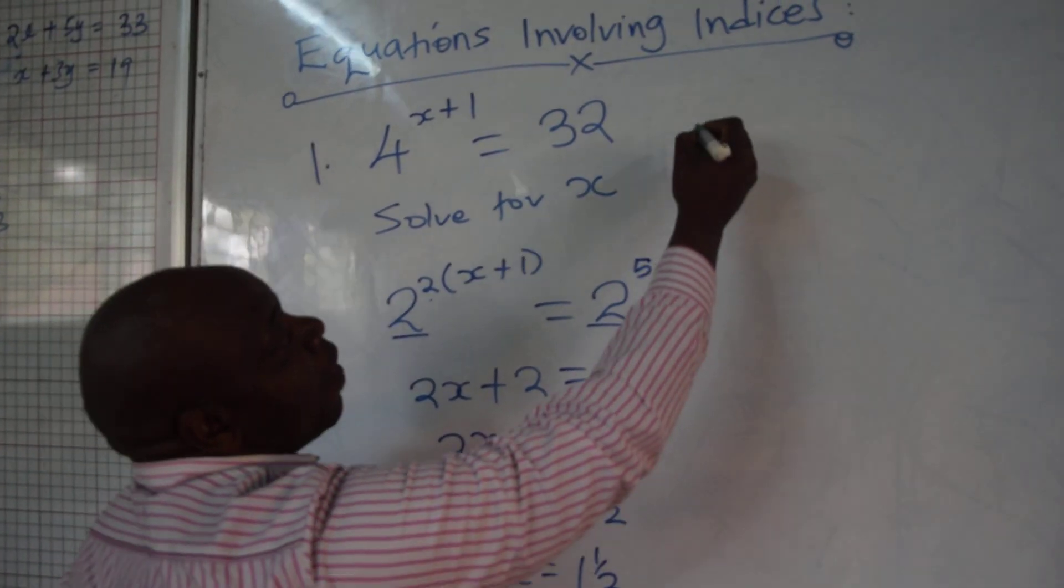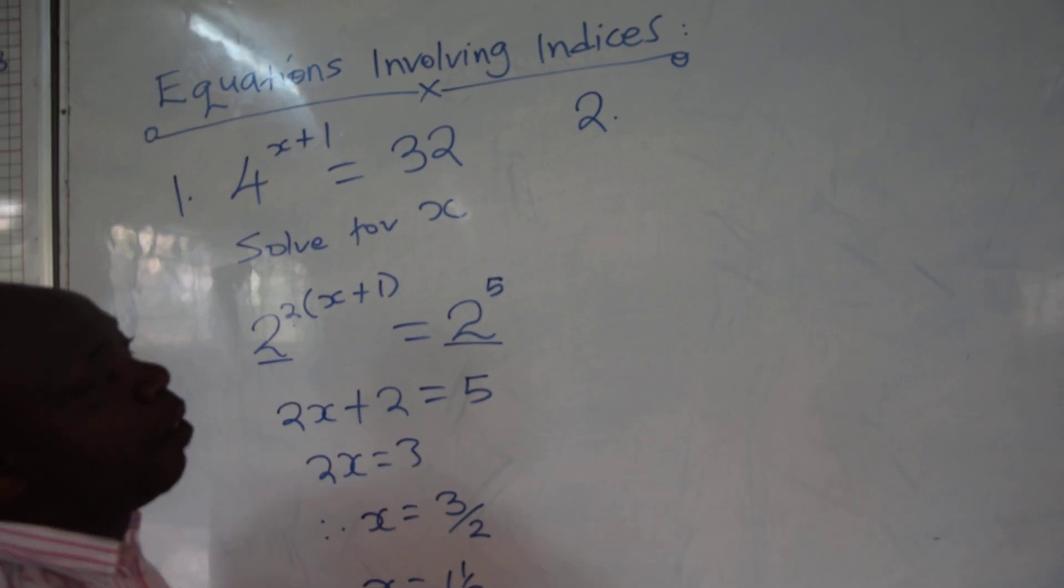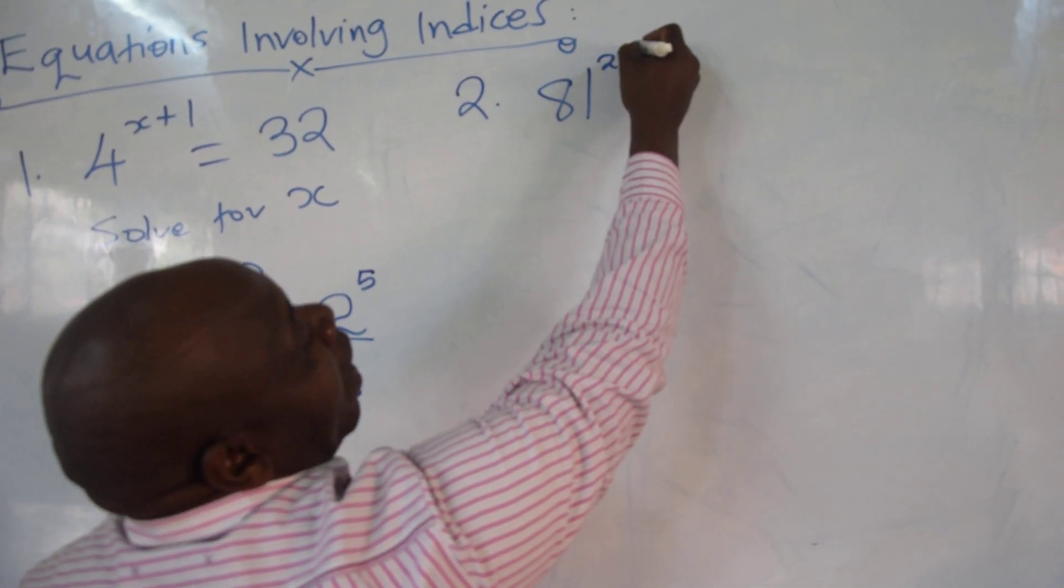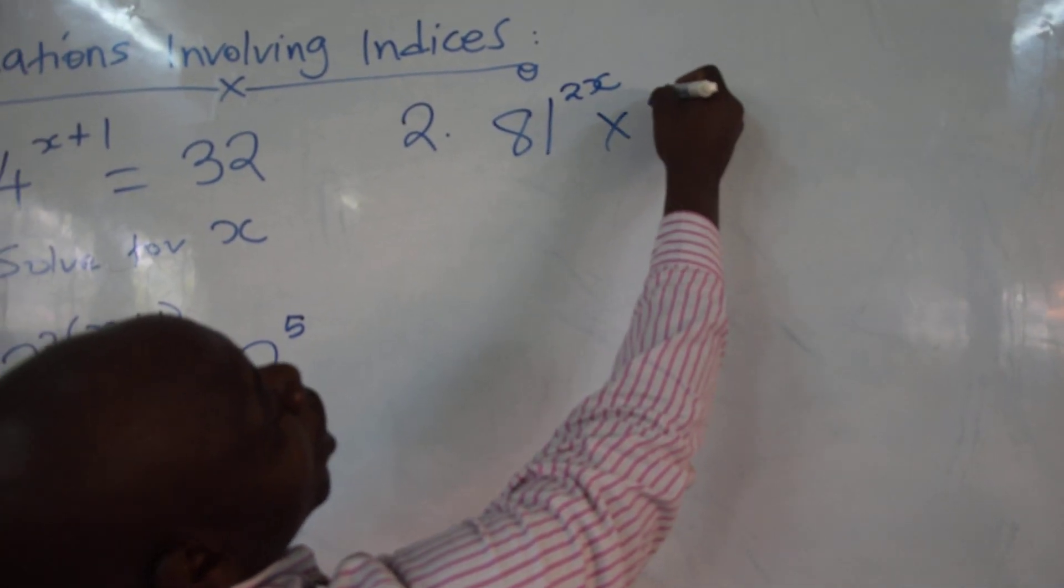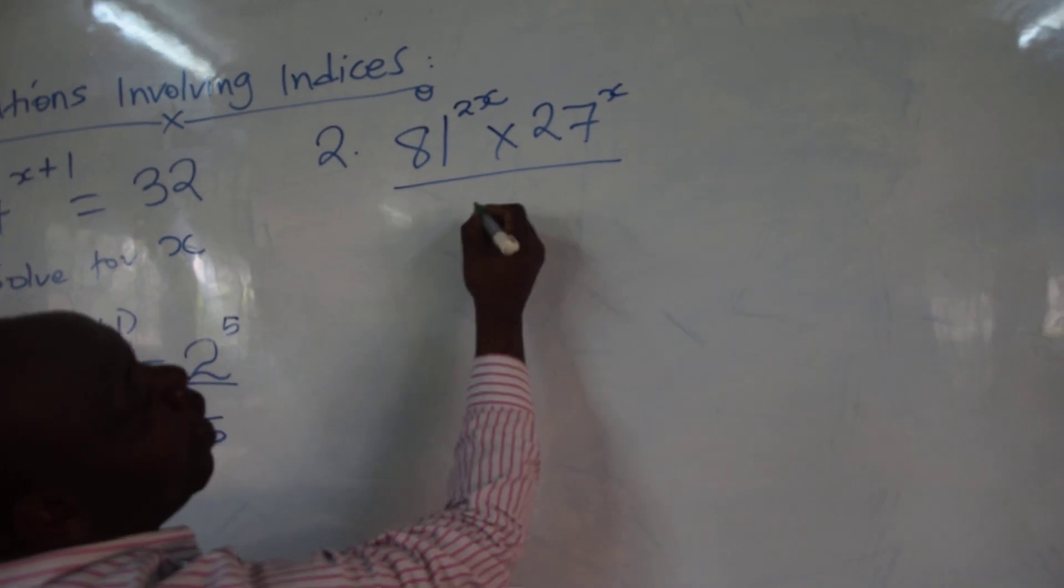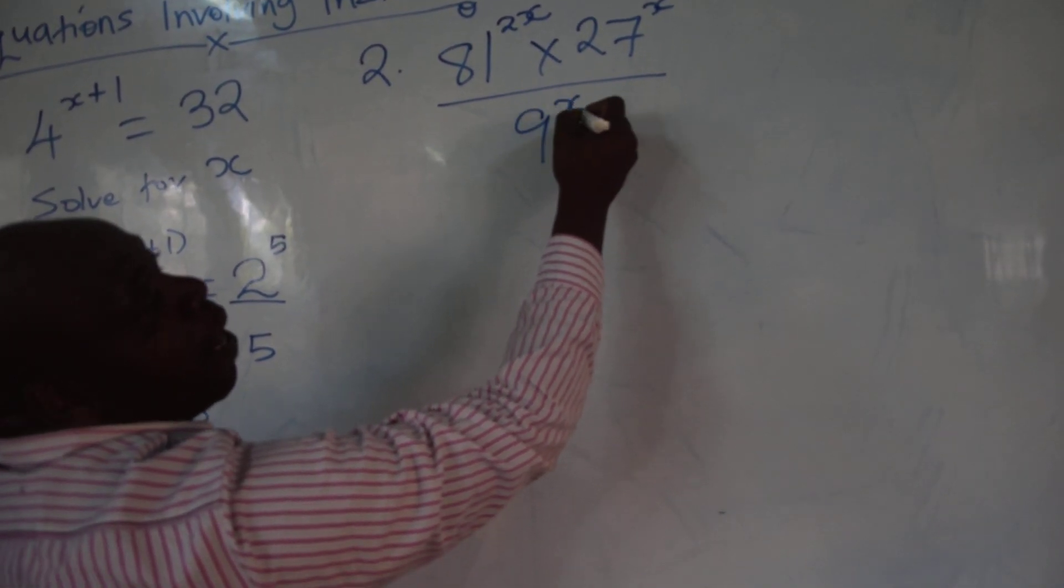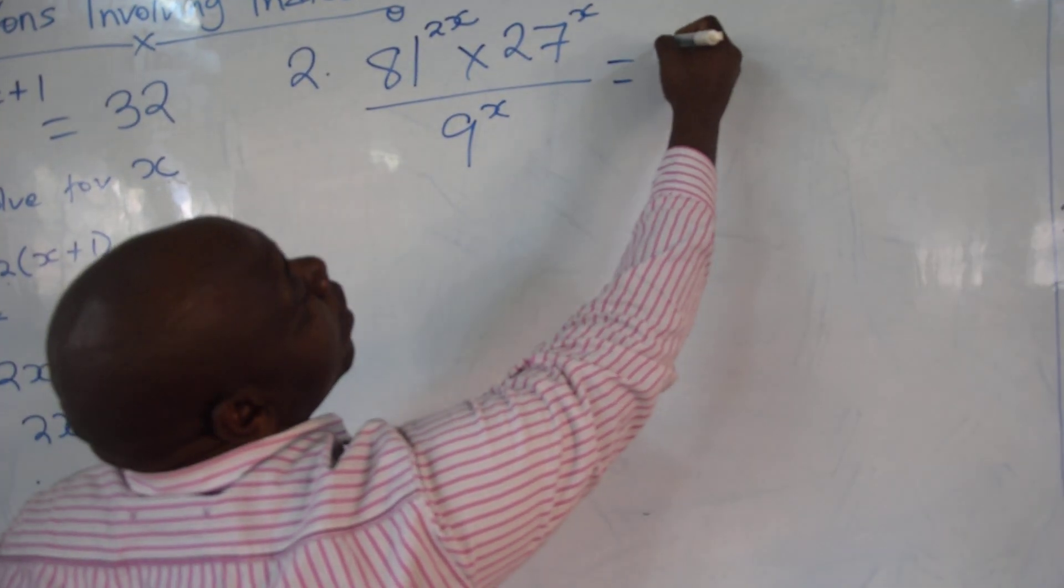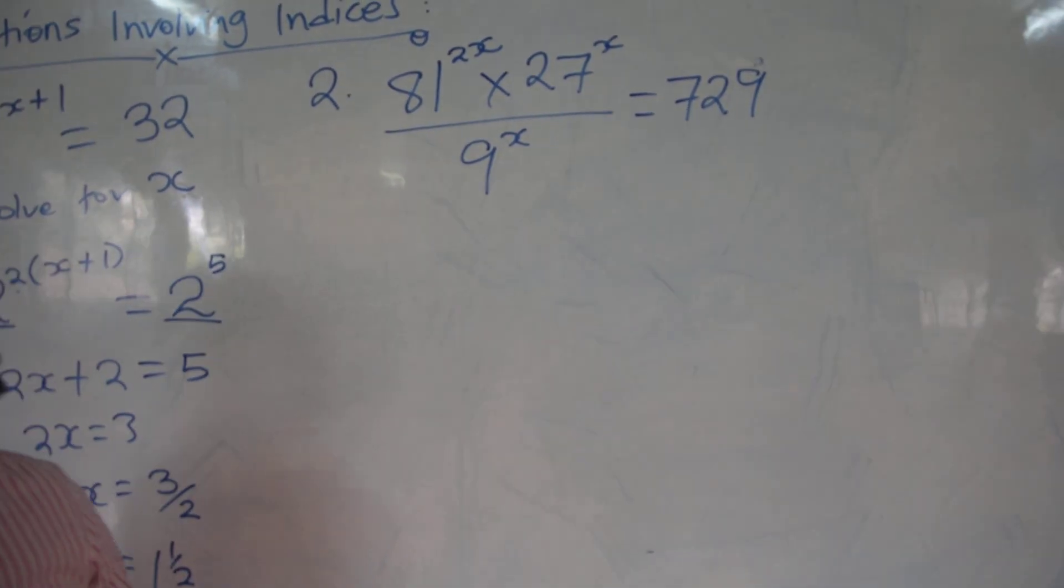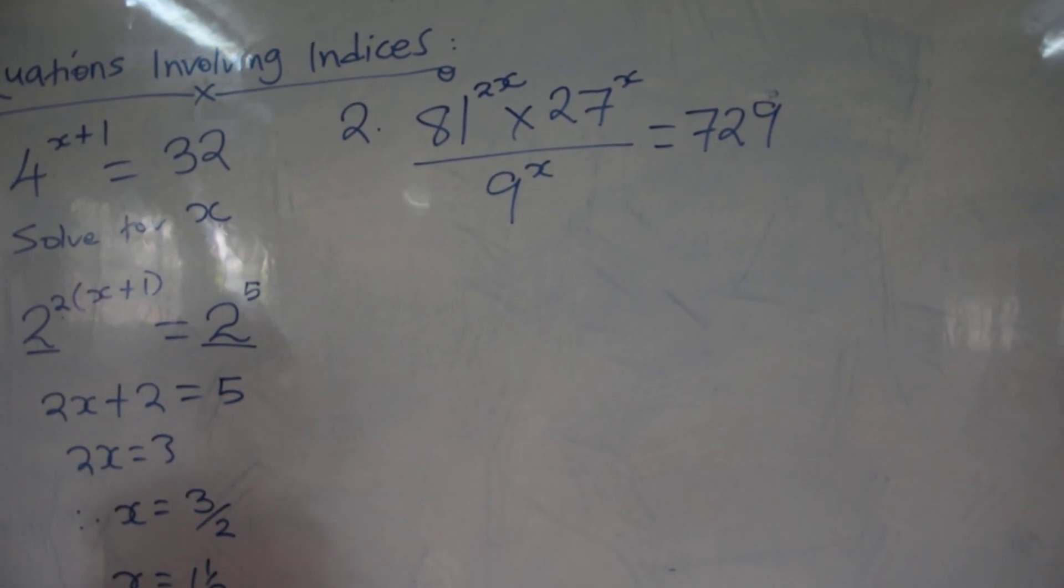Let's do another example. Suppose you are given 81 power 2x times 27 power x over 9 power x equals to 729. You are told to solve for x.